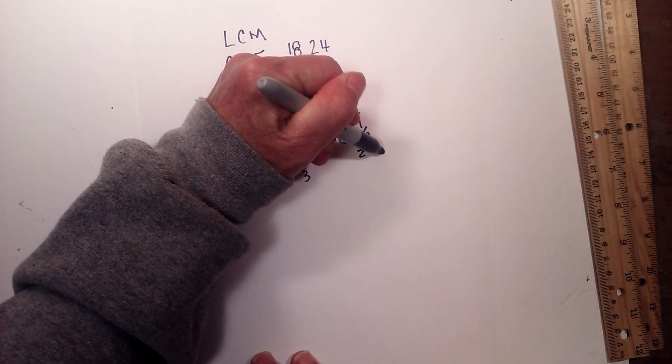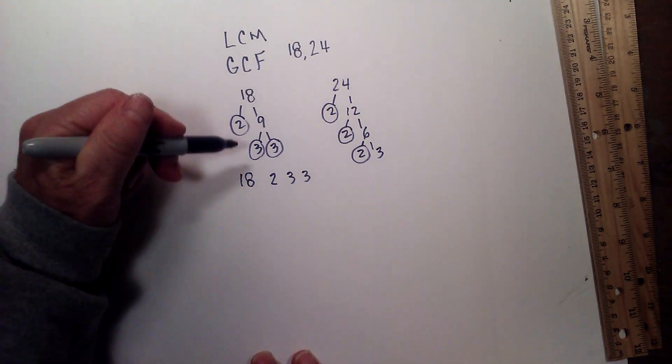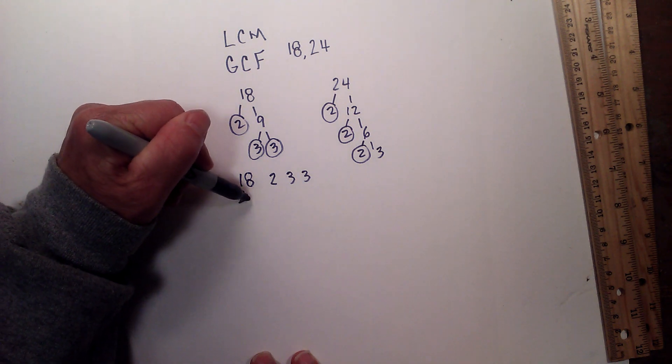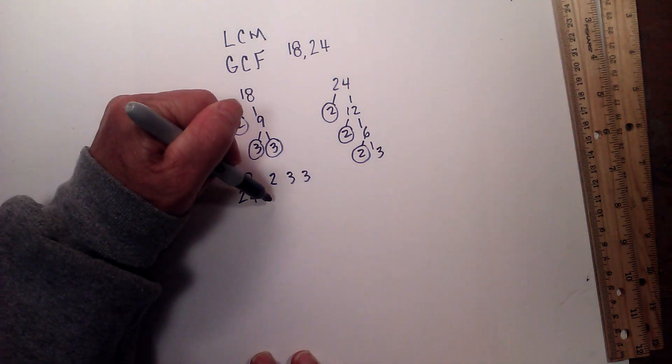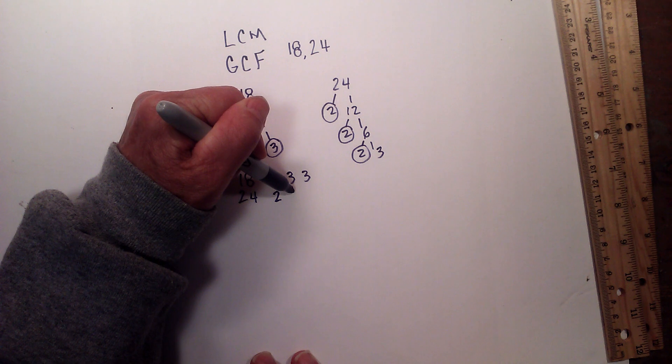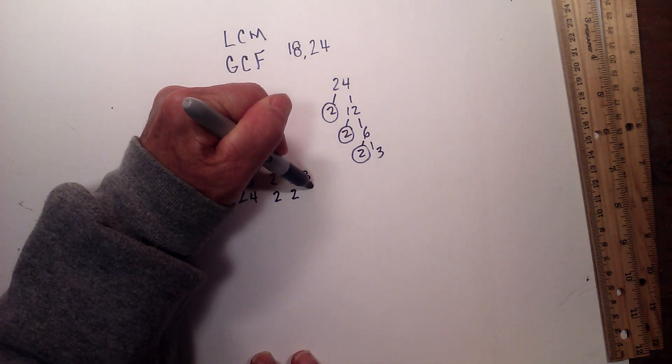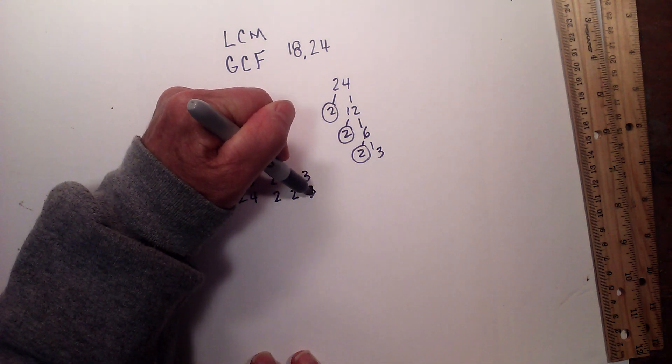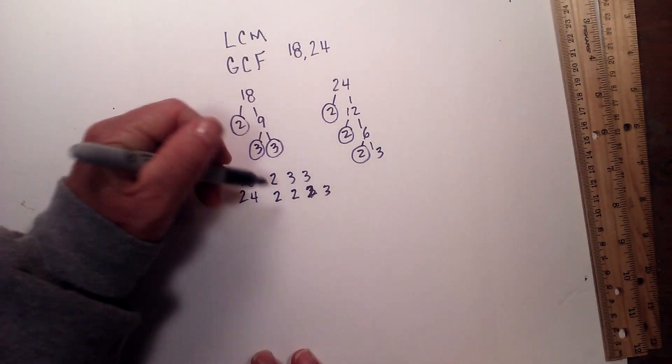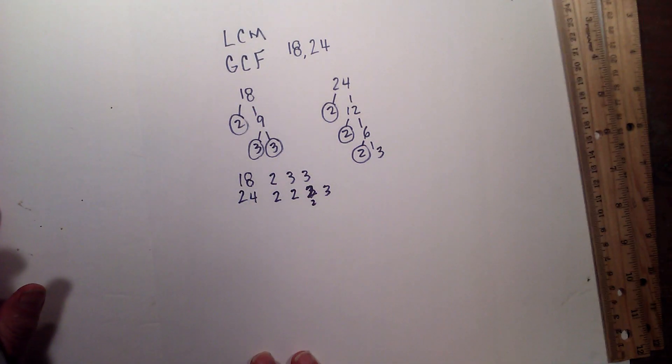So now the prime factors of 24 are 2, 2, 2, and 3. Now in order to find the LCM, you just multiply all the prime numbers that multiply together to equal 18 and 24.